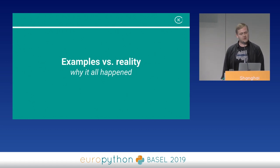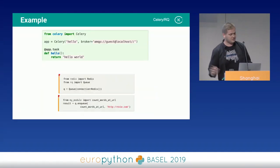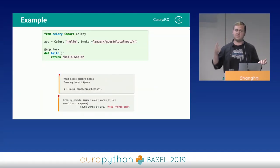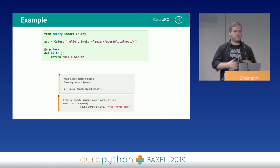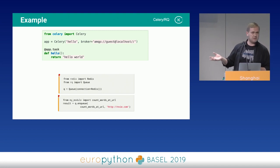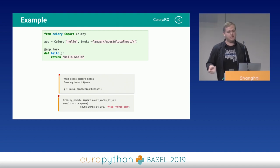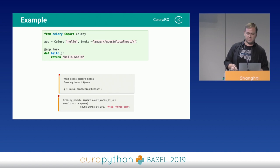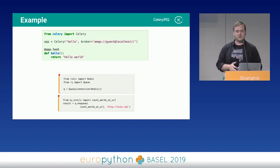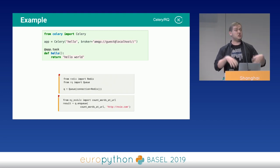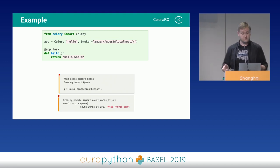The first reason it happened: examples versus reality. In both RQ and Celery, you have these beautiful examples of a simple app — just five lines to scaffold it, and that's it. RQ is lightweight, so we chose it instead of 'the giant Celery that handles everything for you.' But in reality, we suddenly needed a repeater for the task — and in RQ, not included. You have to write it yourself.